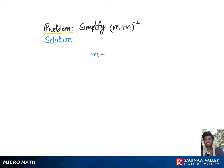To simplify (m + n) raised to the negative 4, let's go over the rule of negative exponents, which says that to change negative exponents into positive, we just need to move them from numerator to denominator or from denominator to numerator.